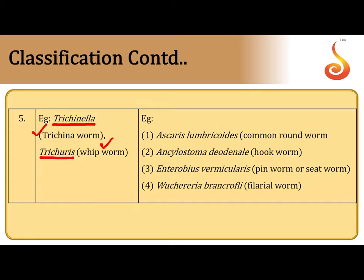The most well-known parasites come under Phasmidia, which have Phasmids in their tail. These include Ascaris lumbricoides, the common intestinal roundworm of humans, and Ancylostoma duodenale, the hookworm, which infects through bare skin — the larva bores through the skin and enters the body. Ascaris is transmitted through contaminated food and water. Enterobius vermicularis, the pinworm or seatworm, is very common among children who play in the soil.